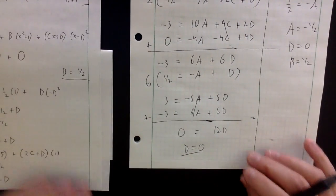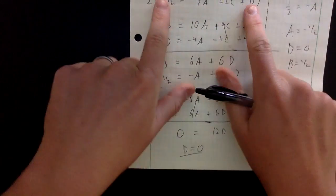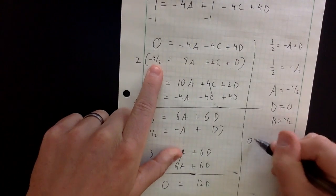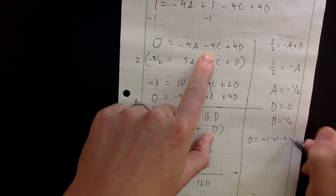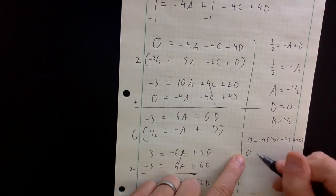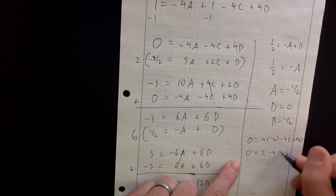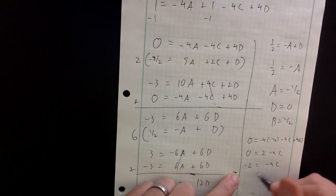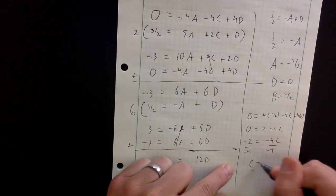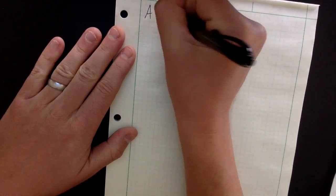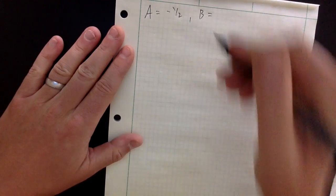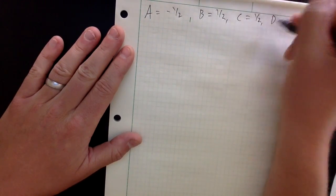Finally I need to solve for C. Using equation three: 0 equals minus 4 times (minus one half) minus 4C plus 4 times 0, giving 0 equals 2 minus 4C. Subtracting 2 and dividing by minus 4: C equals one half. So all four variables are: A equals minus one half, B equals one half, C equals one half, D equals 0.